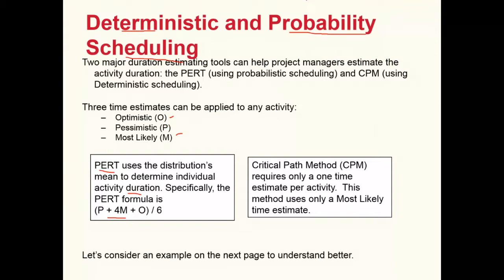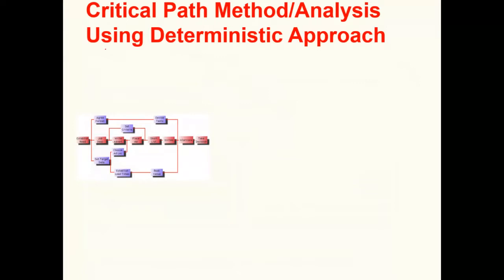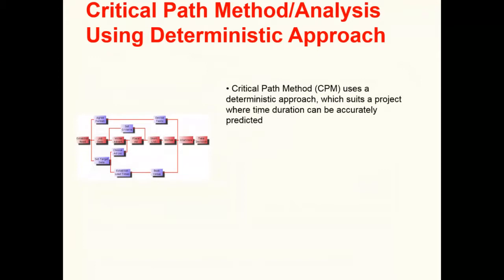In construction it is very difficult to have precise cast-in-stone times. Contractors will give a time bracket: in ideal conditions with perfect weather, the optimistic time might be seven weeks, but if materials are late or weather is inclement, the pessimistic time could be 12 weeks. In the examples seen so far, we have used the deterministic approach — CPM uses a deterministic approach which suits projects where time and duration can be accurately predicted, though CPM can also use probabilistic times.